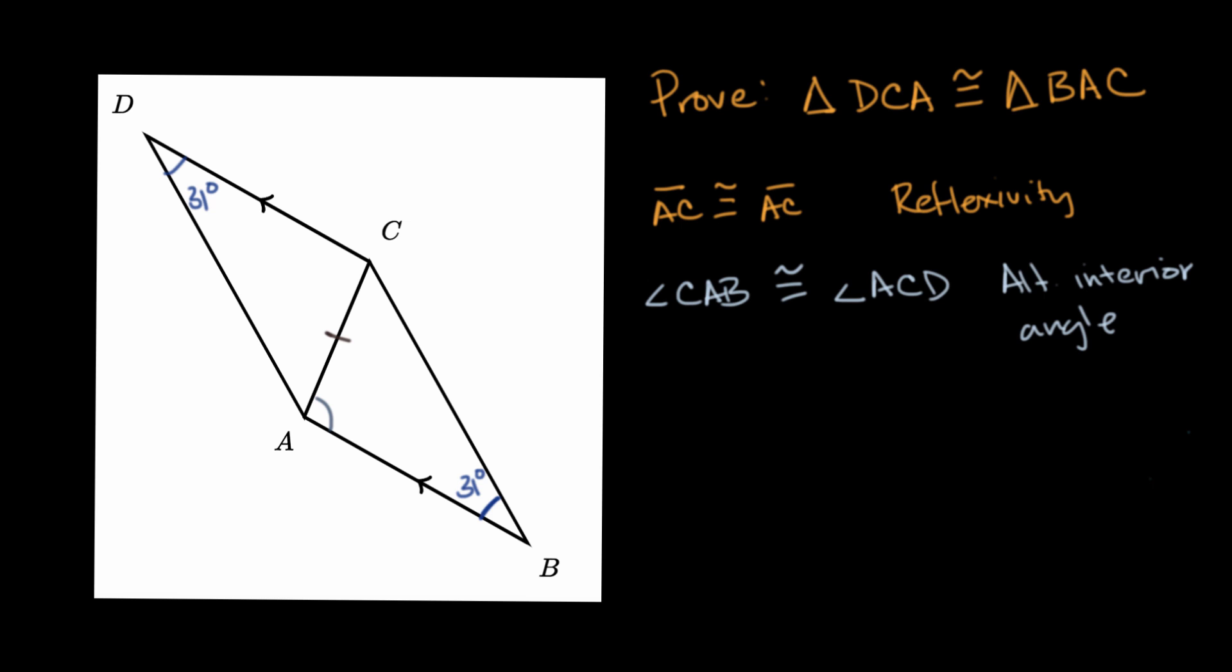So, just to be clear, this angle, which is CAB, is congruent to this angle, which is ACD. And so now we have two angles and a side. Two angles and a side that are congruent.